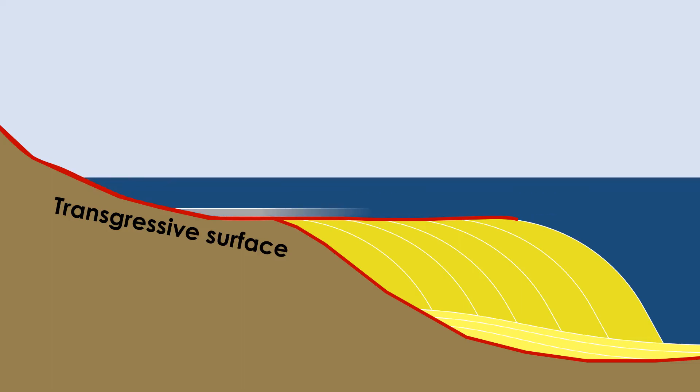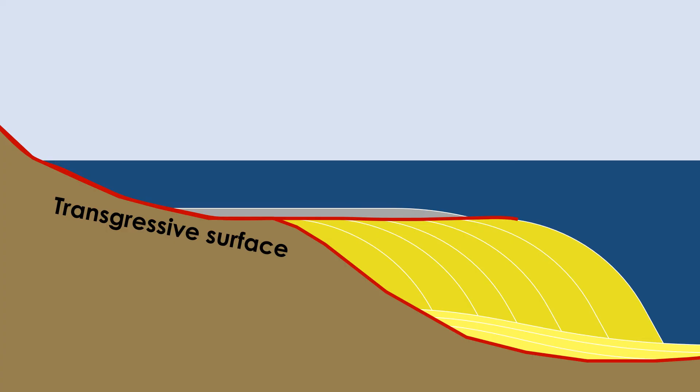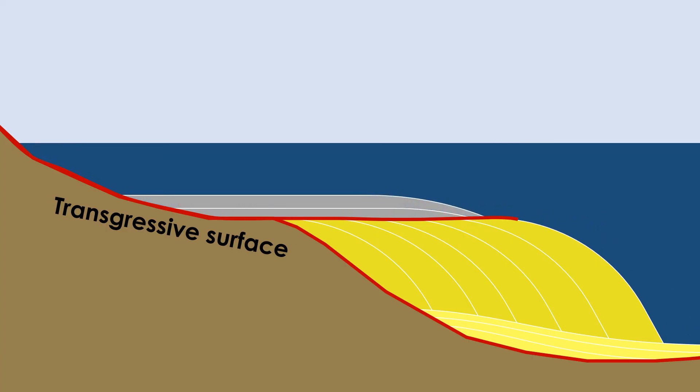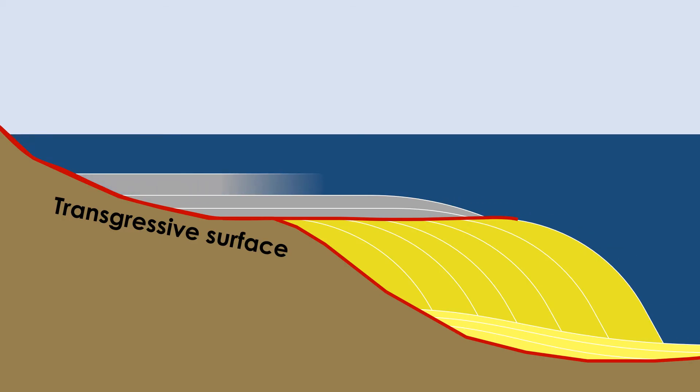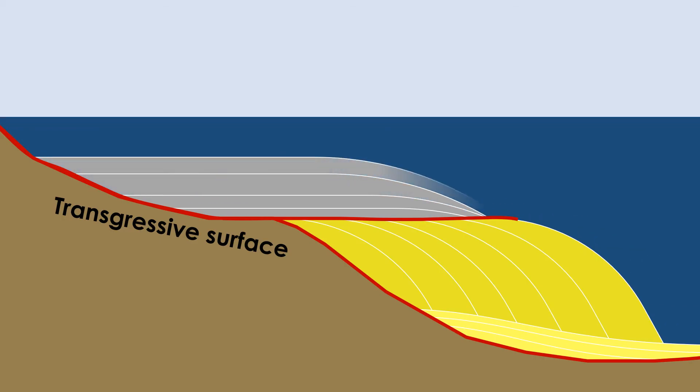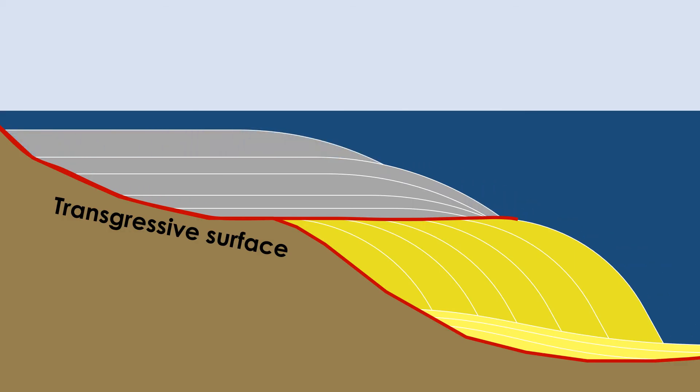Eventually, the rate of accommodation space creation becomes greater than the supply of sediment. At this point, the package of layers are deposited on a transgressive surface and called the transgressive systems tract. These layers have a retrogradational pattern. The facies deepen upward as the coastline begins to move back toward land.